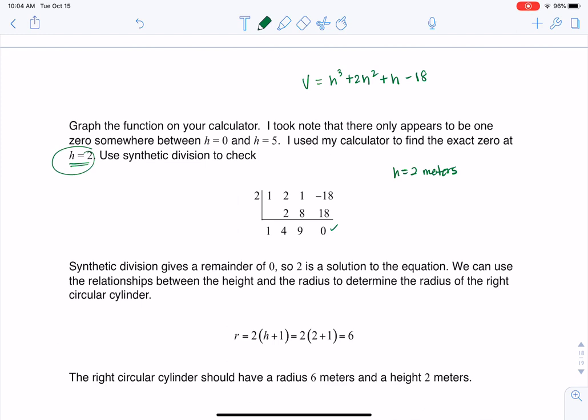But we had the equation for that radius from above. We knew the radius was 2 times height plus 1. Well, if I substitute in that value of 2, I'm going to get 2 times 2 plus 1. That's going to be 2 times 3, which is 6.